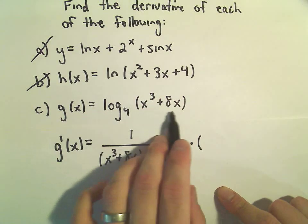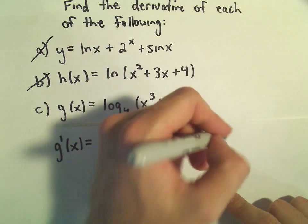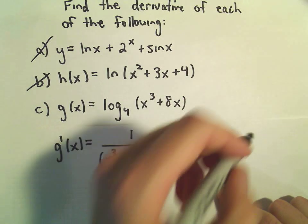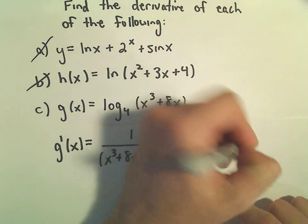And then by the chain rule, we've got to take the derivative of the inside. So the derivative of x cubed will just be 3x squared. The derivative of positive 8x will just be positive 8.